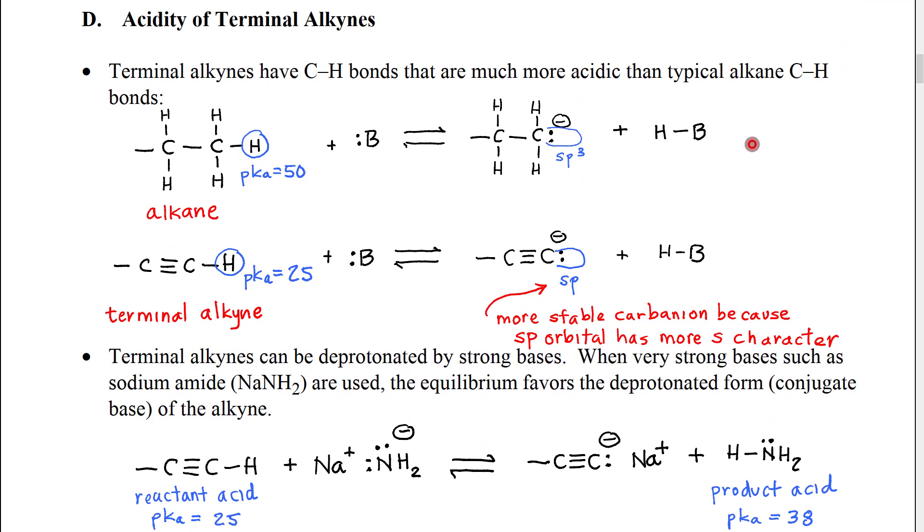Another important feature of alkynes is the acidity of terminal alkynes. So as we mentioned before, terminal alkynes have carbon-hydrogen bonds on the alkyne carbon.